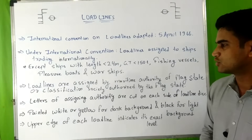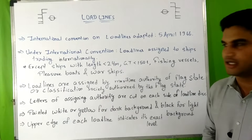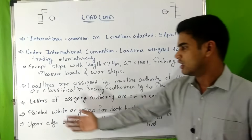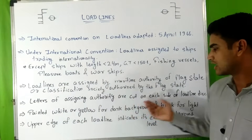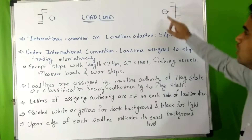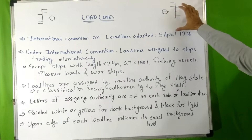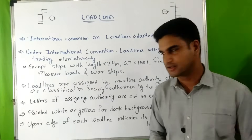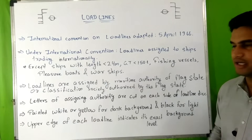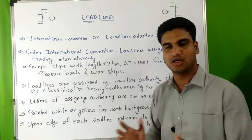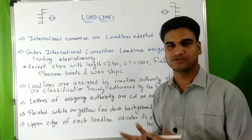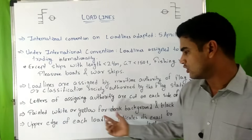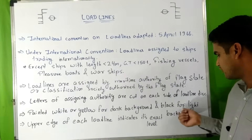Load lines are assigned by the maritime authority of the flag state or a classification society authorized by the flag state. The letters of these assigning authorities are cut on each side of the load line disk on both the starboard and port side. They are painted white or yellow for a dark background and black for a light background.